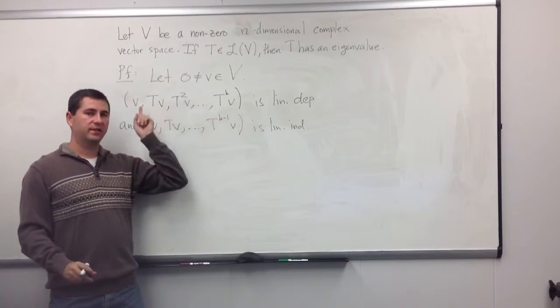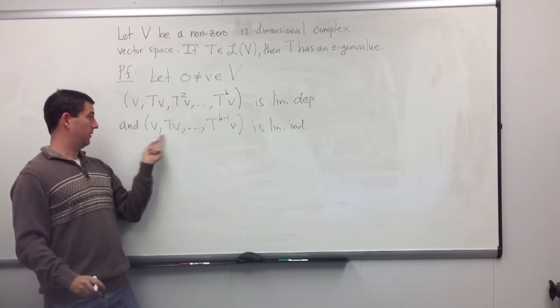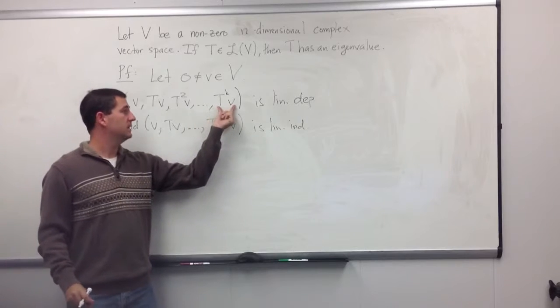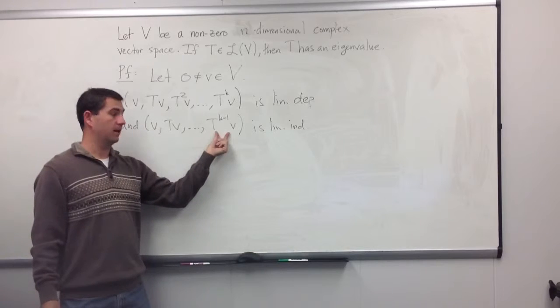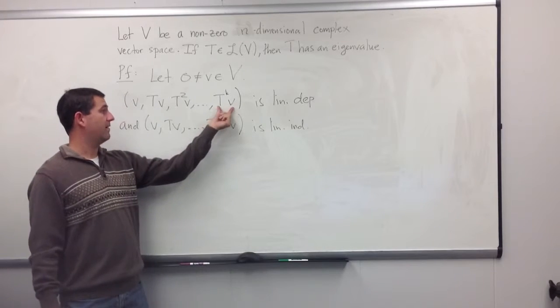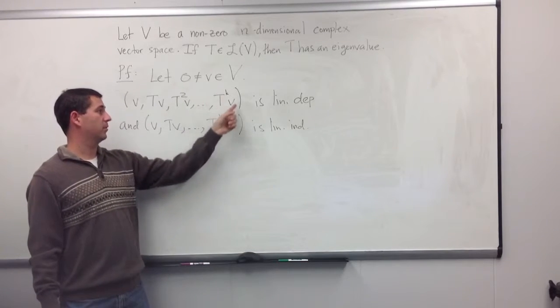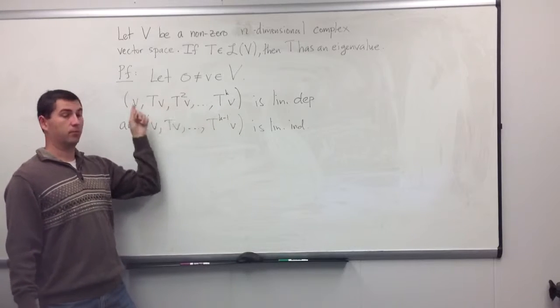Knowing that this is a linearly dependent list, and that this was not, tells me that T^k v can be written as a linear combination of v through T^(k-1)v. If I have a linearly dependent list, the last term in the list can be written as a linear combination of previous terms.